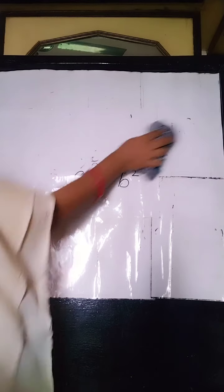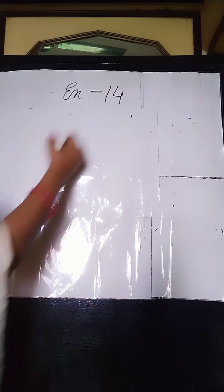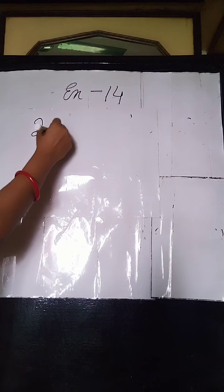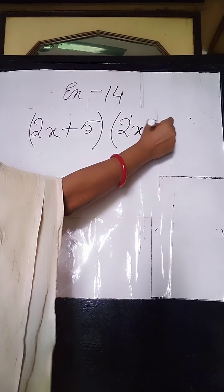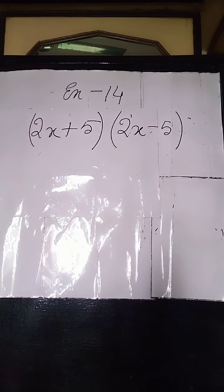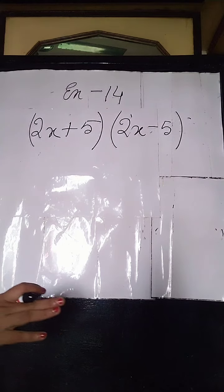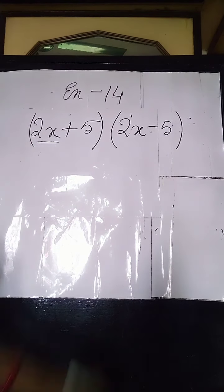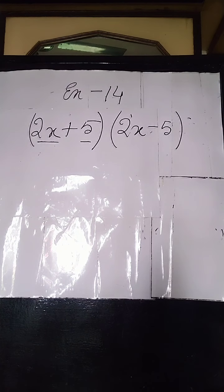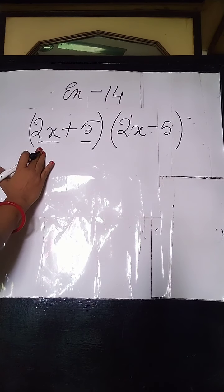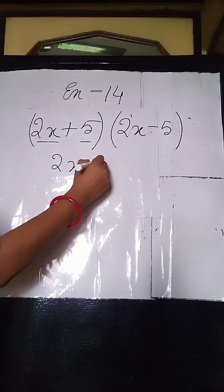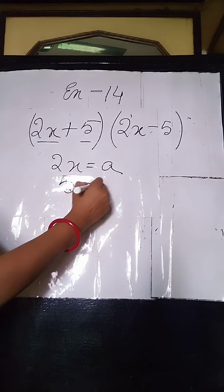The first sum of Exercise 14 is given as (2x + 5) into (2x − 5). You will first identify the first term and the second term. Here, 2x is the first term and 5 is the second term. You can see it is the product of sum and difference of two terms, so A equals 2x and B equals 5.